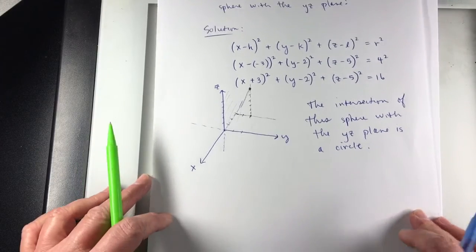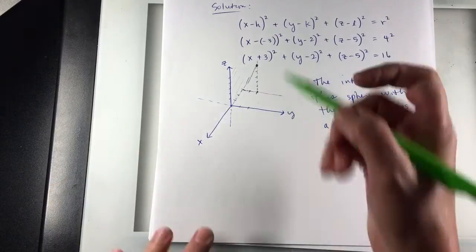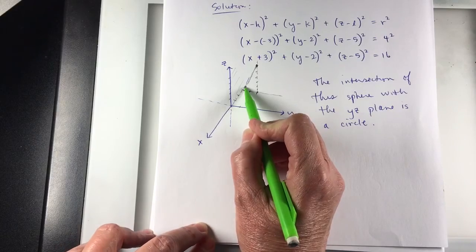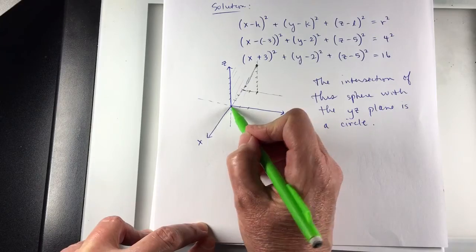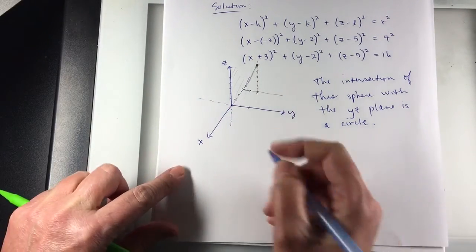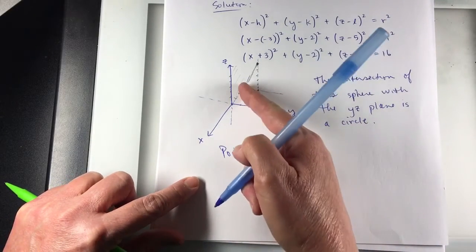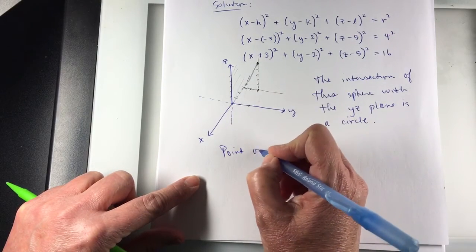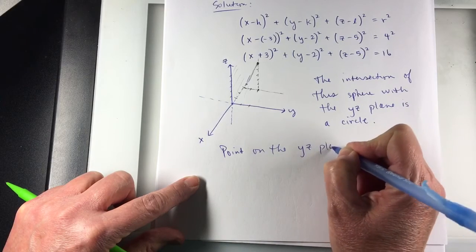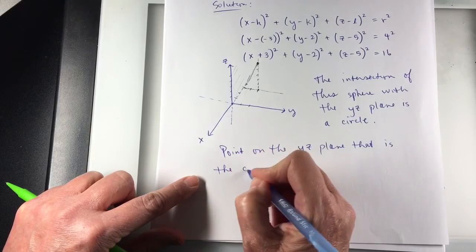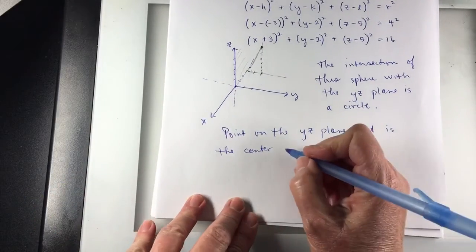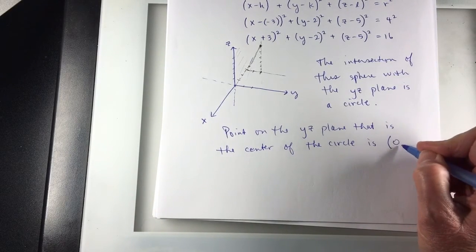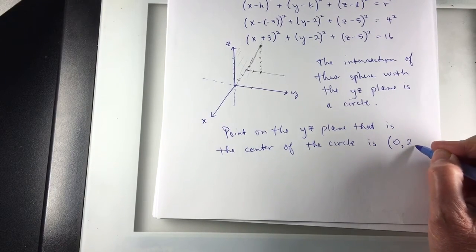So I guess now if I'm going to find the equation of the circle, I'm thinking as I go toward the yz plane, I need to know what point I'm hitting. It's going to be 0 for the x-coordinate. So the point, now actually that point is not on the circle. That point's going to be the center of the circle. The point on the yz plane that is the center of the circle is going to be (0, 2, 5).